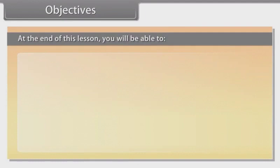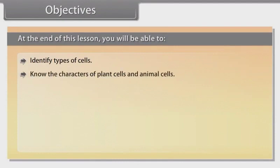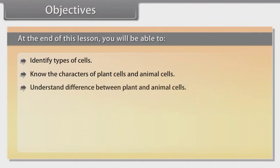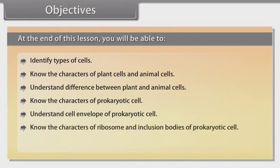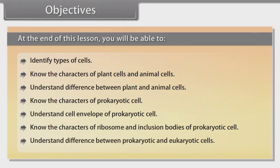Objectives: At the end of this lesson, you will be able to identify types of cells; know the characters of plant cells and animal cells; understand the difference between plant and animal cells; know the characters of prokaryotic cells; understand the cell envelope of prokaryotic cells; know the characters of ribosomes and inclusion bodies of prokaryotic cells; and understand the difference between prokaryotic and eukaryotic cells.